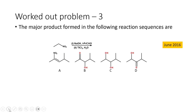Let us move on to the next problem. This problem appeared in June 2016. The question is: the major product formed in the following reaction sequence? We have step one — sodium hydroxide (a base) in the presence of an aldehyde — and step two — TiCl3 and water. The starting material is a nitro derivative, nitroethane, and we have to identify the final product.